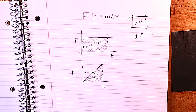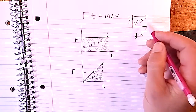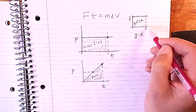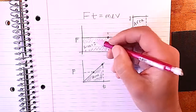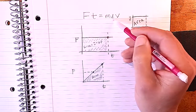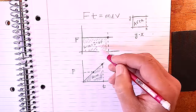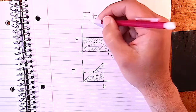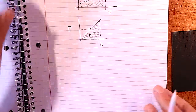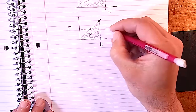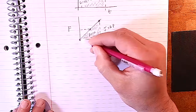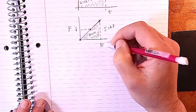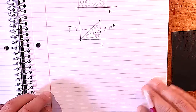We can use a graph to determine impulse or change in momentum. On any graph, Y times X gives the area of a rectangle. So on a force-versus-time graph, F times T equals M delta V — meaning the area under the graph equals the impulse or change in momentum. If the force is changing but uniformly increasing, we can find the average force at the halfway point and multiply by time, which equals the area of that triangle.